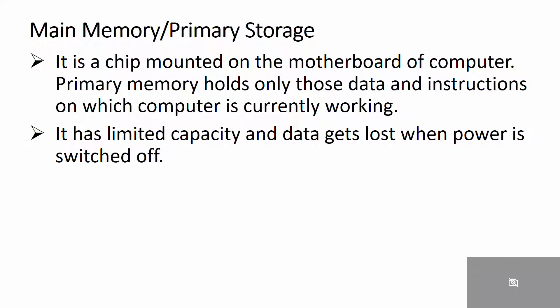Main memory, or primary memory, is the main memory of the computer. It is a chip mounted on the motherboard of a computer. Primary memory holds only those data and instructions on which the computer is currently working. It has limited capacity and the data gets lost when the power is switched off or the computer is shut down.